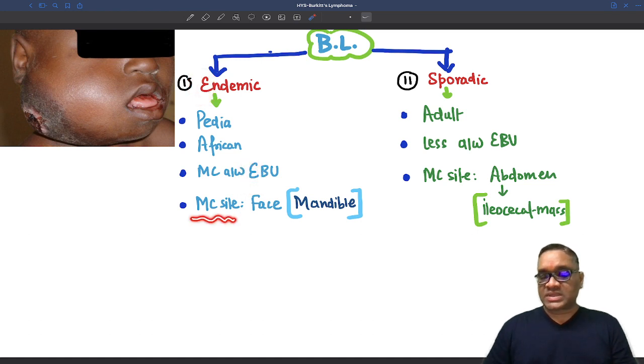What is the most common site? Face is the most common site and where? In the mandible. So now you can see this baby's face is affected and in the mandible, you are going to see the lesion.